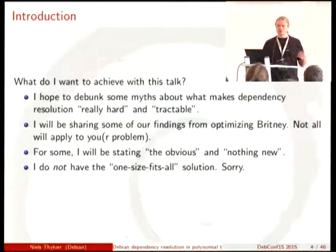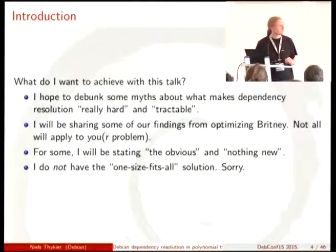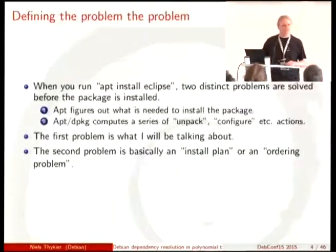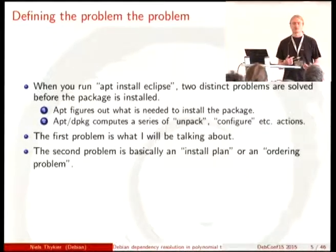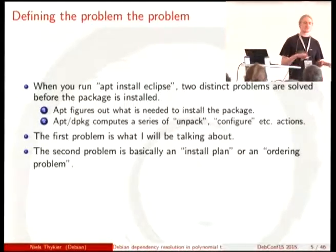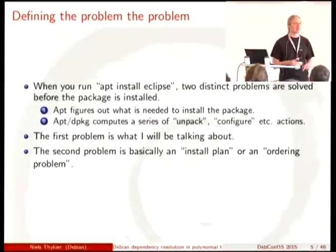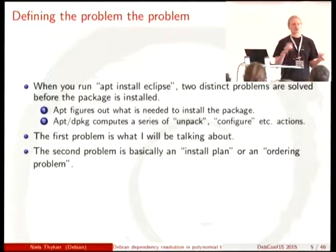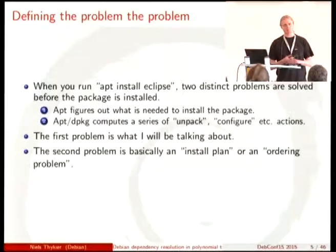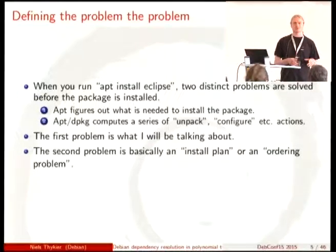I've been working on Brittany, which is a different problem to solve but uses some of the same techniques — some will be directly applicable to apt, some will not. There's not a one-size-fits-all solution, and I haven't written it yet either. When you try to install a package on your system, there are actually two problems being solved. One is where apt figures out if you install Eclipse, you'll need a lot of Java packages and other stuff — figuring out which packages are needed. The second problem is that once you have this list, packages have to be unpacked and configured in a certain order. I'll be talking about the first problem, because that's actually dependency resolution. The other is just ordering.